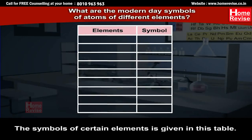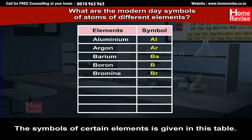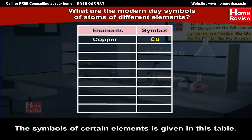The symbols of certain elements are given in this table. Aluminum — Al, Argon — Ar, Barium — Ba, Boron — B, Bromine — Br, Calcium — Ca, Carbon — C, Chlorine — Cl, Cobalt — Co, Copper — Cu, Fluorine — F, Gold — Au, Hydrogen — H.